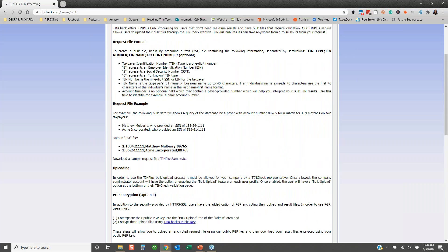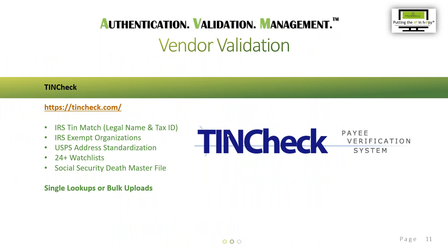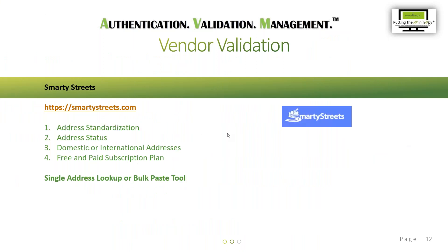The next tool is Smarty Streets. Because I do a bulk upload with TenCheck and can't include addresses in that file, I use Smarty Streets for bulk address uploads. What I really like about it is that unlike the United States Postal Service or TenCheck which is connected to the USPS database, Smarty Streets will not only standardize the address for you but it will also give you the status of the address. It handles domestic and international addresses and has free and paid subscription plans.